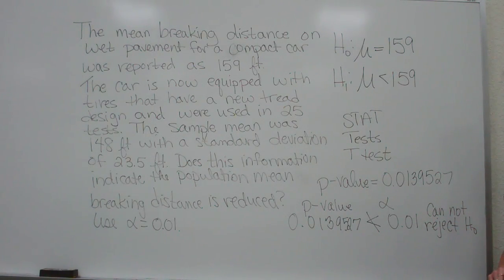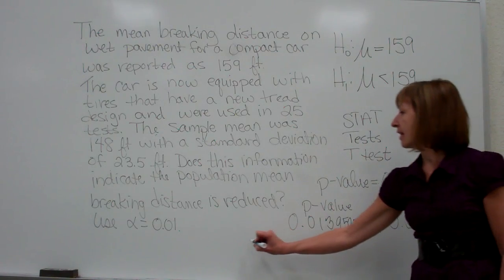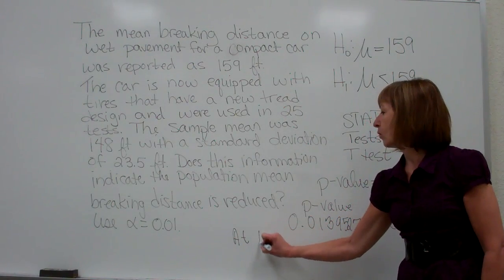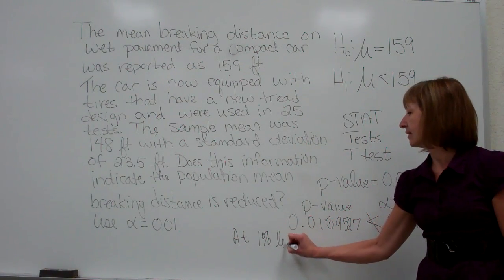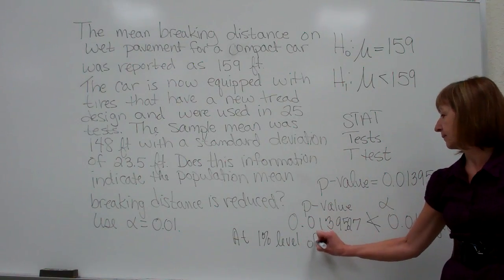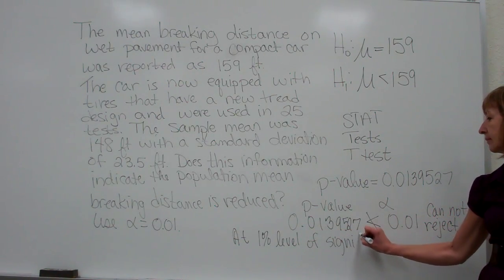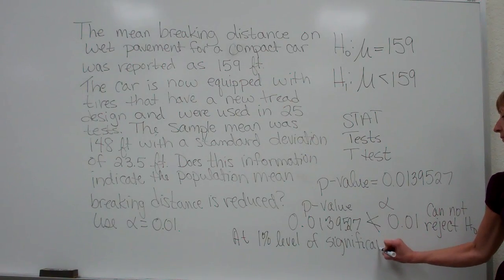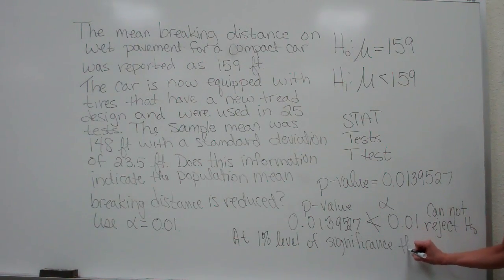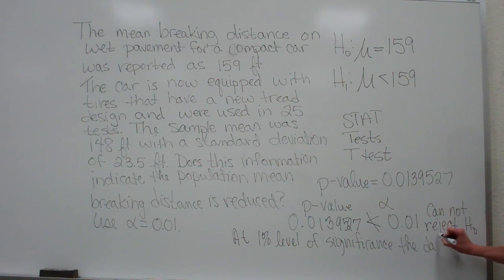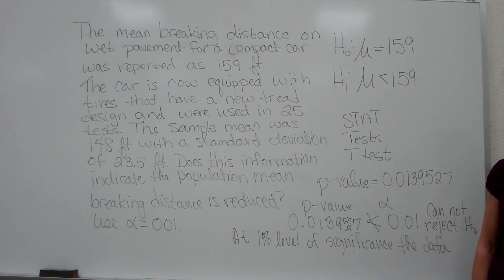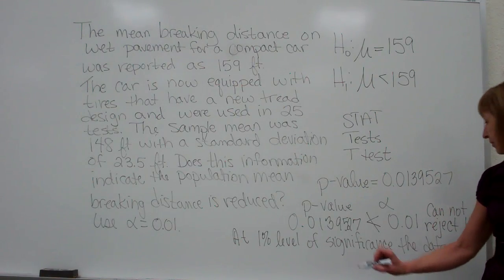So since you can't reject the null, you say that at a 1% level of significance, the data does not indicate that the mean stopping time or braking distance has reduced.